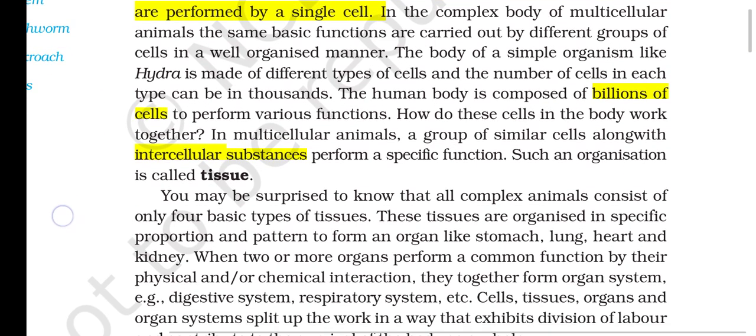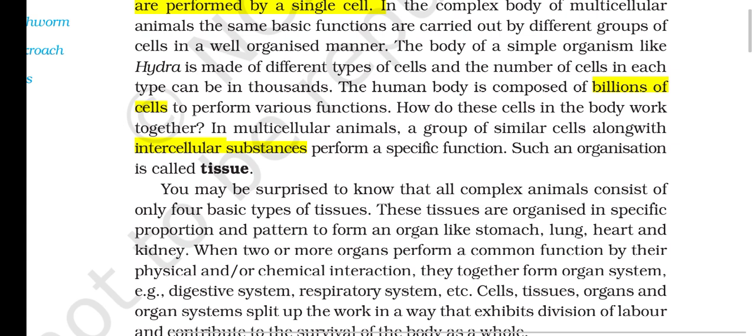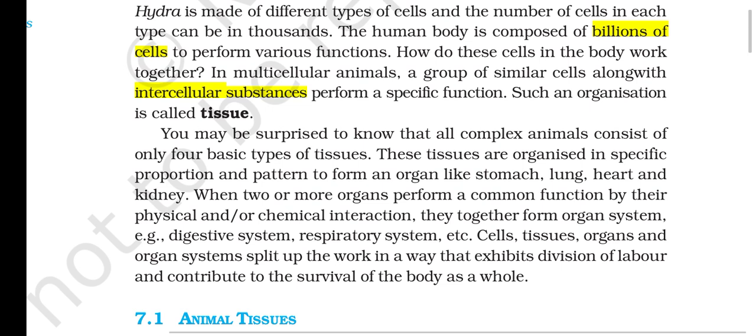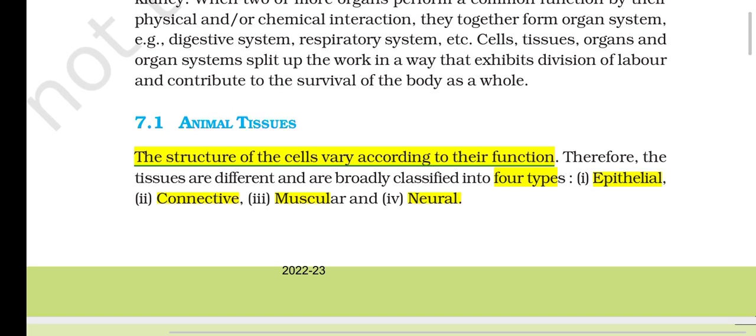All complex animals consist of only four basic types of tissues. These tissues are organized in a specific proportion and pattern to form organs like stomach, lung, heart and kidney. When two or more organs perform a common function by their physical or chemical interaction, they together form an organ system — for example, the digestive system, respiratory system, etc. Cells, tissues, organs and organ systems exhibit division of labour and contribute to the survival of the body as a whole.